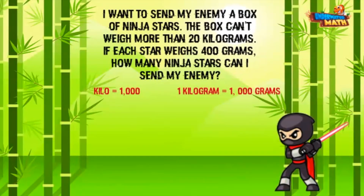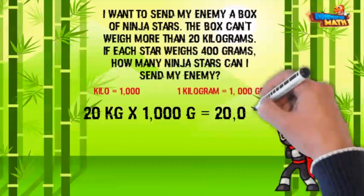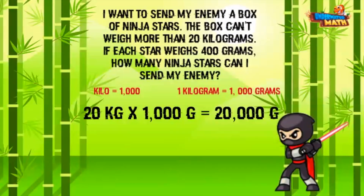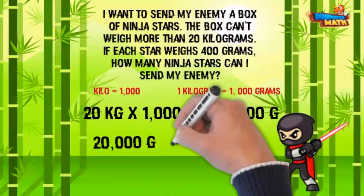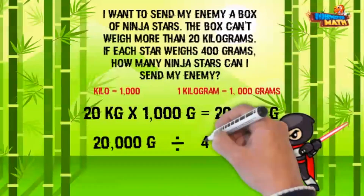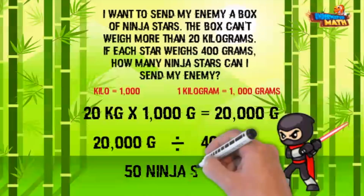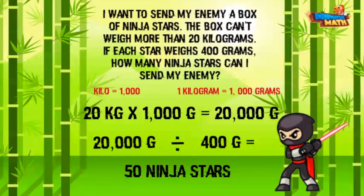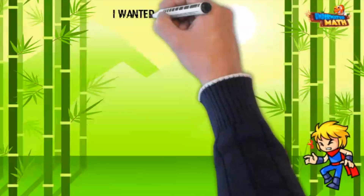Kilo means 1,000, and there are 1,000 grams in one kilogram. So we multiply 20 kilograms times 1,000, which equals 20,000 grams. Each ninja star has a mass of 400 grams. We need to divide 20,000 by 400 to get our answer, which is 50. He can send his enemy 50 ninja stars!